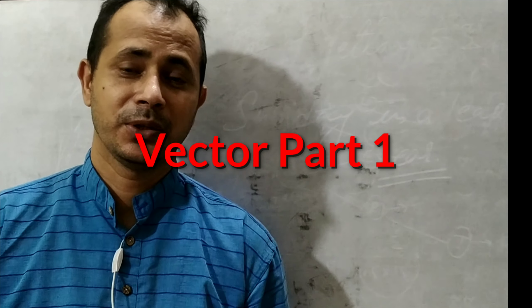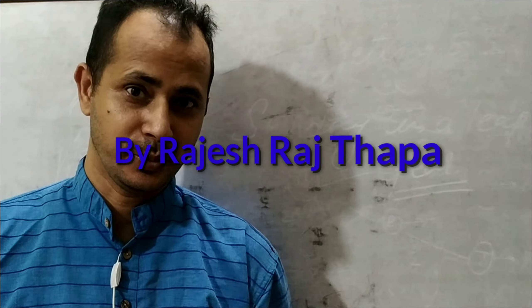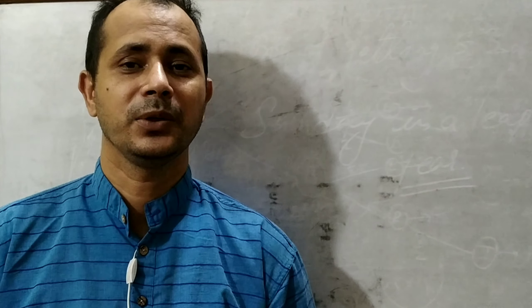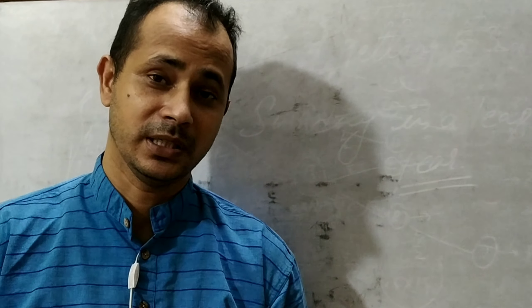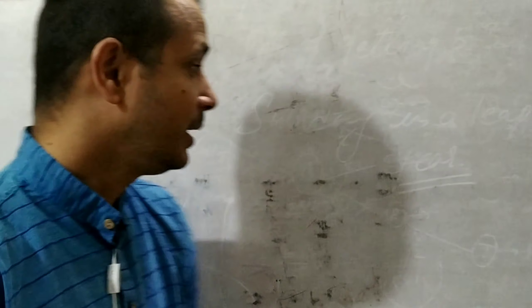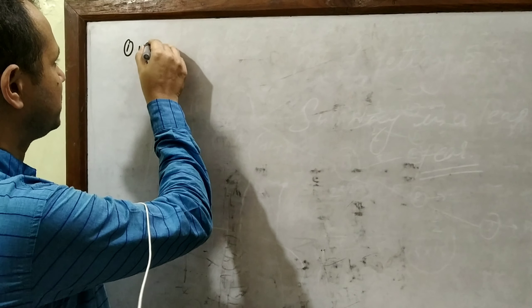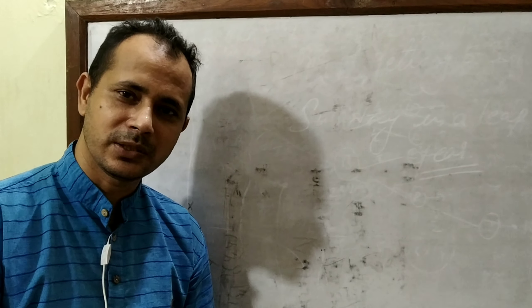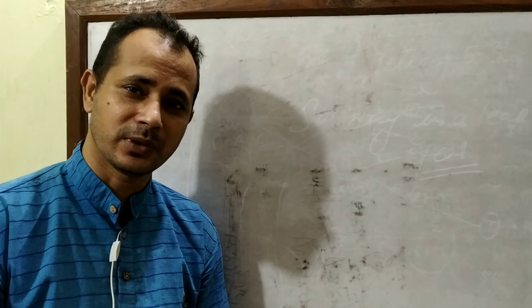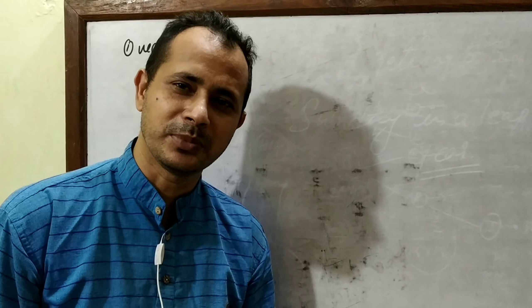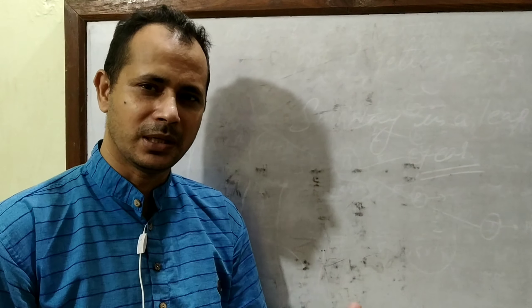Hello students, welcome. In this video, I will be discussing vector geometry, which is one of the most important topics of mathematics. Today we'll cover what a vector is, how many types of vectors there are, and how we operate on vectors. Before we start vectors, we must know the meaning of physical quantity. Physical quantity means those quantities which can be measured and expressed in terms of number. For example, mass equals 50 kg.